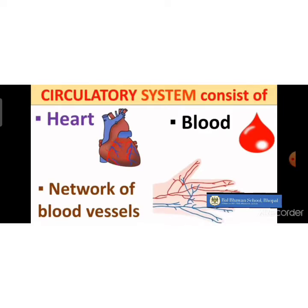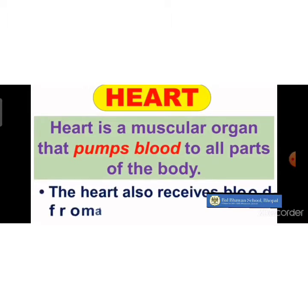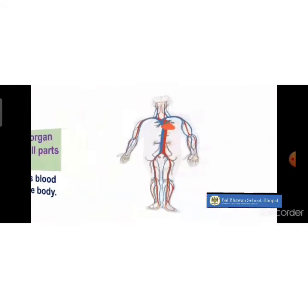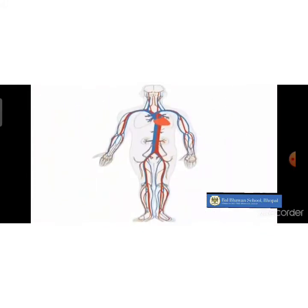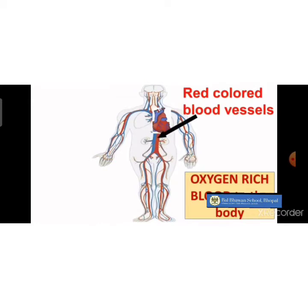The heart is the main organ of the circulatory system. It is a muscular organ that pumps blood to all the parts of the body. It also receives blood from all the organs of the body, purifies it, and transfers the oxygen-rich blood to the different parts of the body through the blood vessels present inside our body.